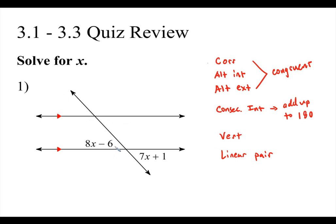So for example, number one: I noticed that this angle here and this angle right here are vertical angles, and we know vertical angles are congruent. So that means I can make 8x minus 6 equal to 7x plus 1. If I solve for x — minus 7x on both sides, add 6 — so x is going to equal 7.